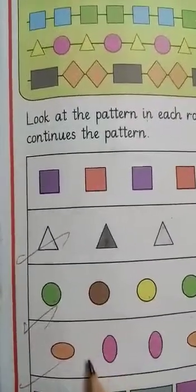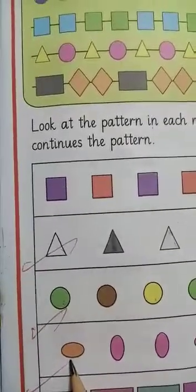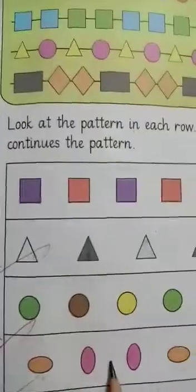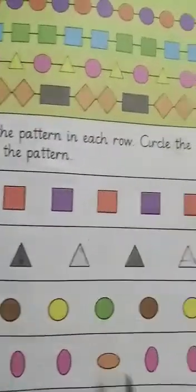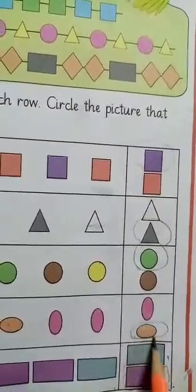And our second last, oval. Good, oval shape. Orange, pink, pink, orange, pink, pink, next shape orange. That's good.